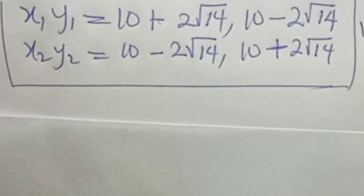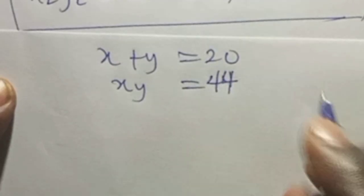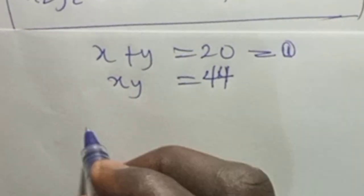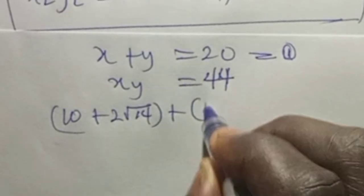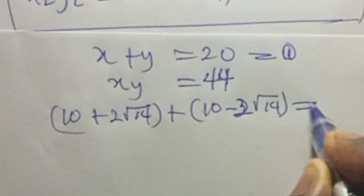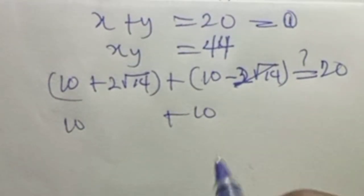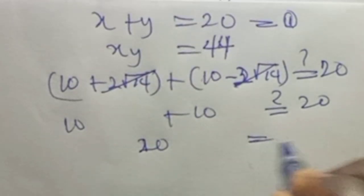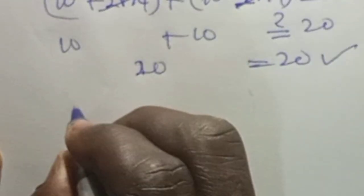To verify, our original equations are s plus y equals 20, and s times y equals 44. Using the first set of values for the first equation: (10 plus 2 root 14) plus (10 minus 2 root 14) equals 20. The root 14 terms cancel, leaving 10 plus 10 equals 20, which is correct. This satisfies the first equation.